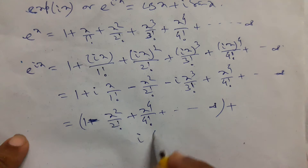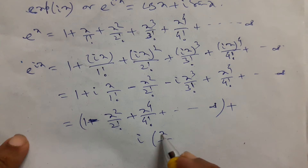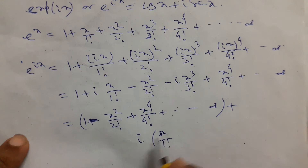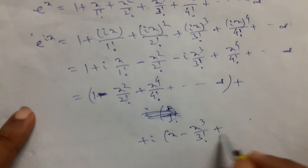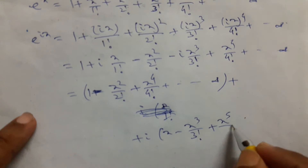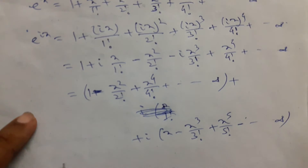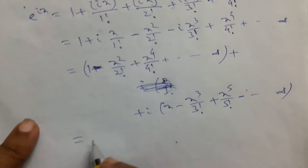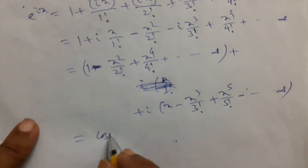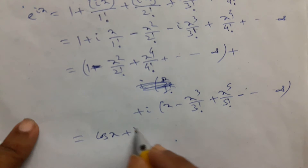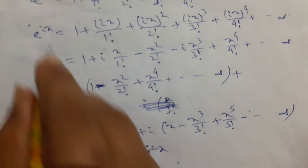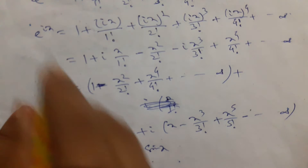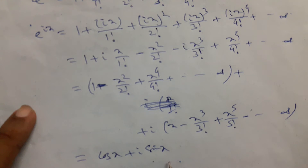The imaginary part is i times x minus x cubed by 3 factorial plus x to the power 5 by 5 factorial minus, and so on. It is clear from the expansion that the real part is the cosine series, which is cos x, and the imaginary part is the sine series, which is sin x. So we have easily proved that e to the power ix equals cos x plus i sin x.